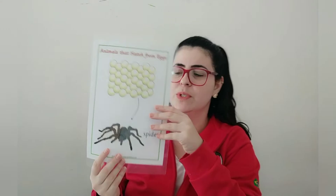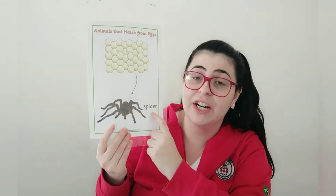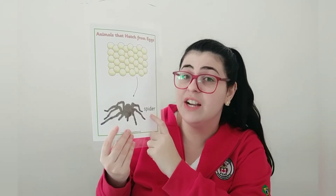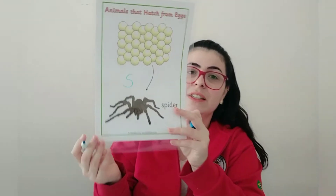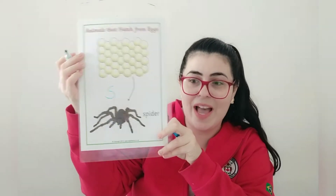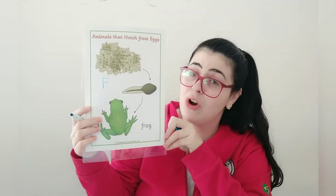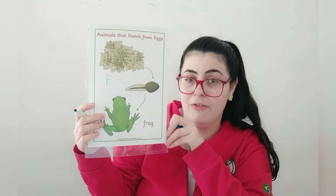For example, I have here many animals. Spider, spider. If your name starts with letter S, look — letter S. Sofia, you can draw a spider. Letter F — if your name starts with letter F, you can draw a frog.